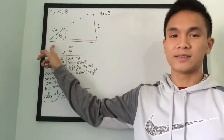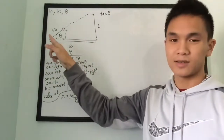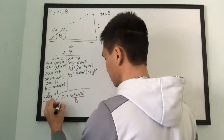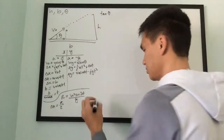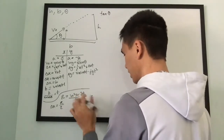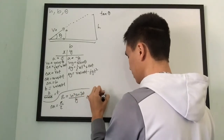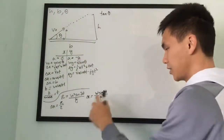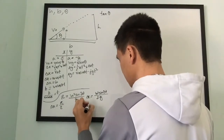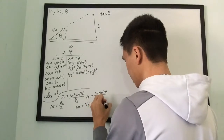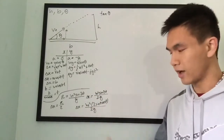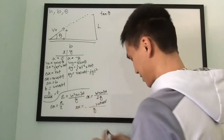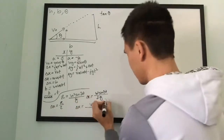The projectile's motion terminates halfway through the actual range. So in the context of this problem, the horizontal distance delta-x equals Range over 2. Plugging in the two, delta-x equals v-naught² · sine(2θ) over 2g. Dividing by two and expanding sine(2θ), you're left with: delta-x equals v-naught² · 2·sine(θ)·cosine(θ) over 2g. You can divide out the twos, leaving v-naught² · sine(θ)·cosine(θ) over g.